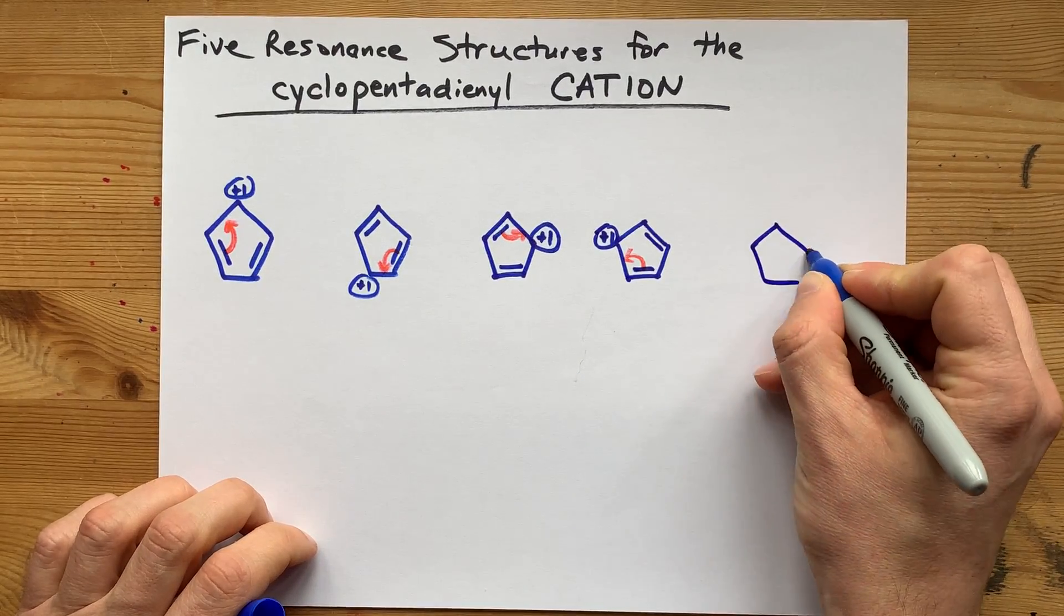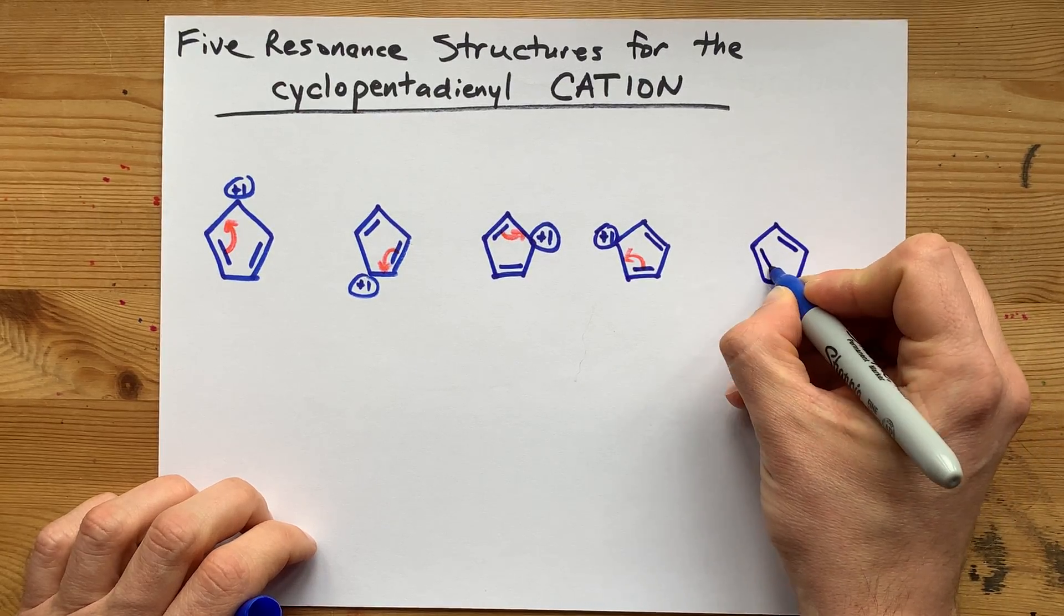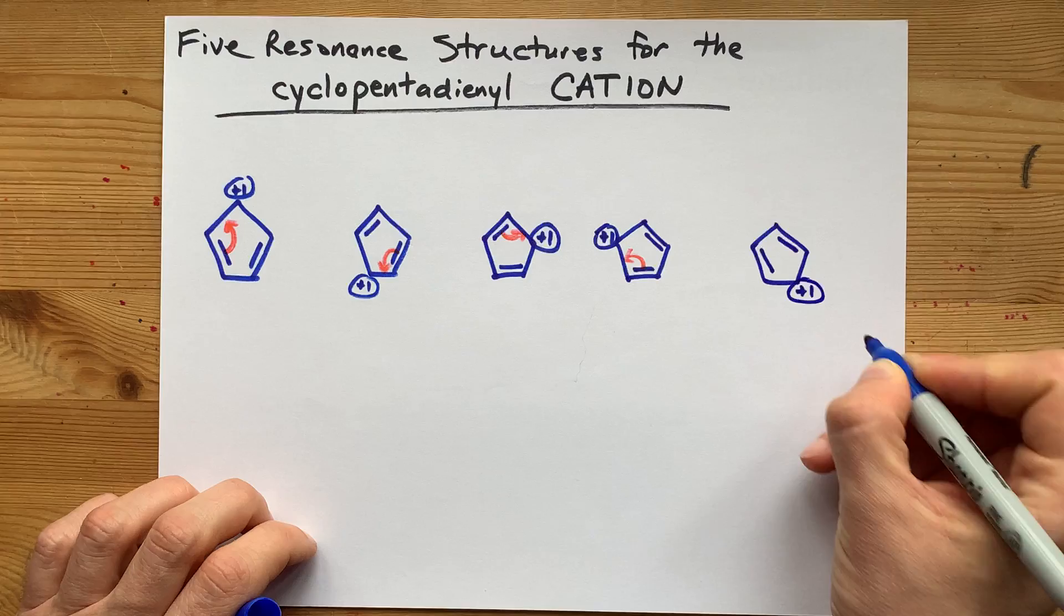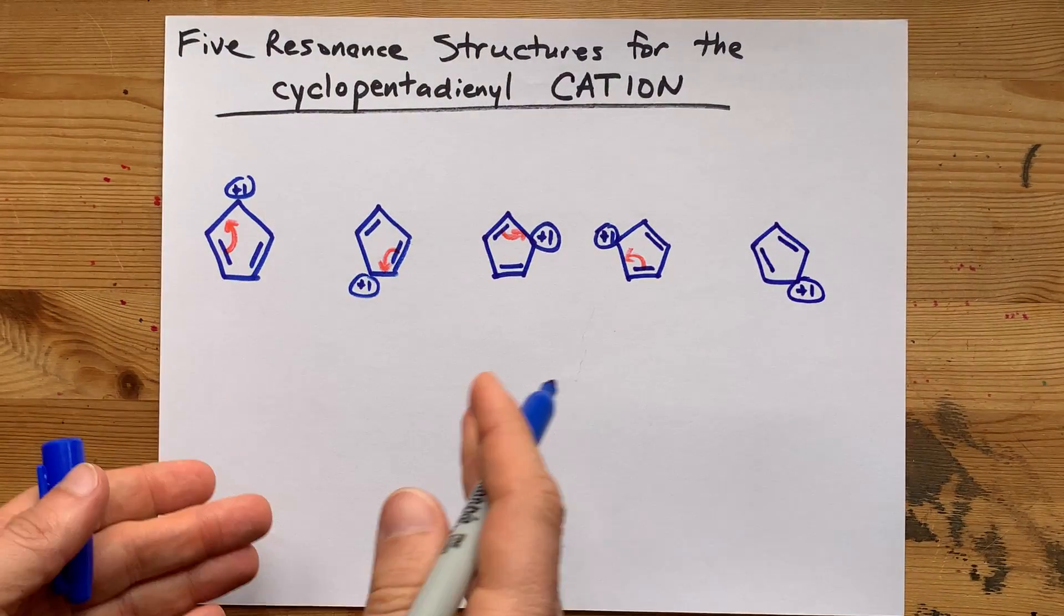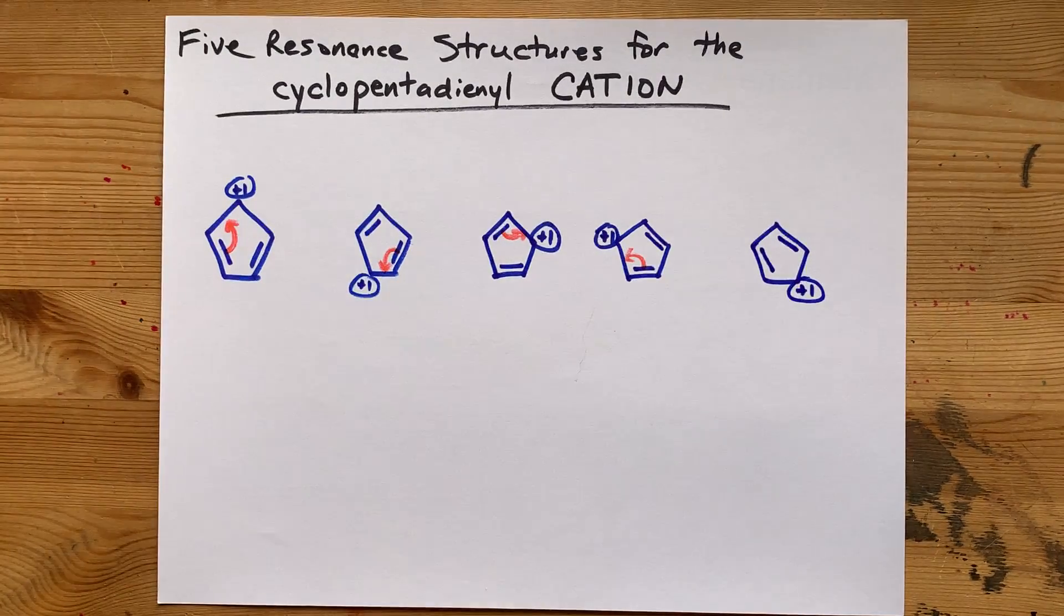Five carbon atoms. That one didn't get touched. And now we have a double bond here and a positive one charge there. You'll notice that each of the five carbon atoms got a formal charge of positive one at some point.